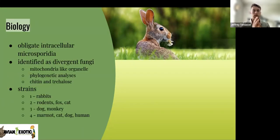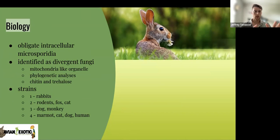So what exactly is this? It's an obligate intracellular microsporidia. It is identified as a divergent fungi for a few reasons. It's got a mitochondria-like organelle, and it's based on phylogenetic analysis. It also has a cuticular host. Different strains that we have, one through four. Strain one is the big one we're going to be talking about today that most commonly affects rabbits.